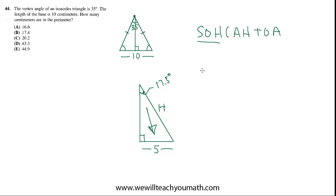So the sine of 17.5 is equal to opposite over hypotenuse where the opposite is 5 and the hypotenuse is h, which we don't know. And we need to rearrange this and solve for h so we can multiply by h on both sides and divide by sine of 17.5.